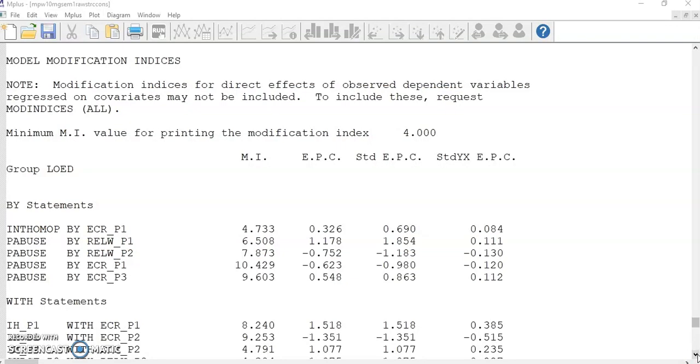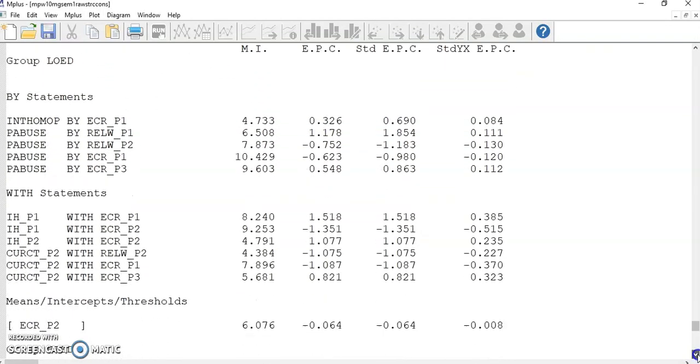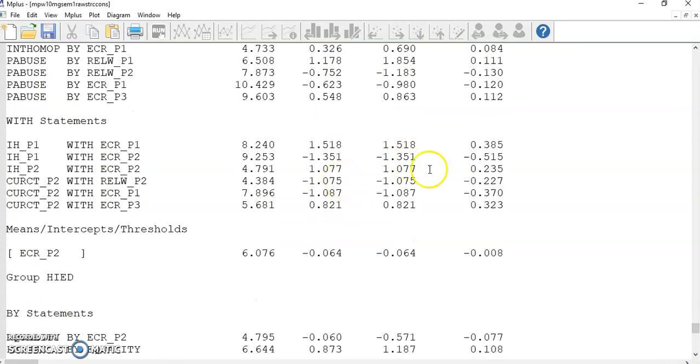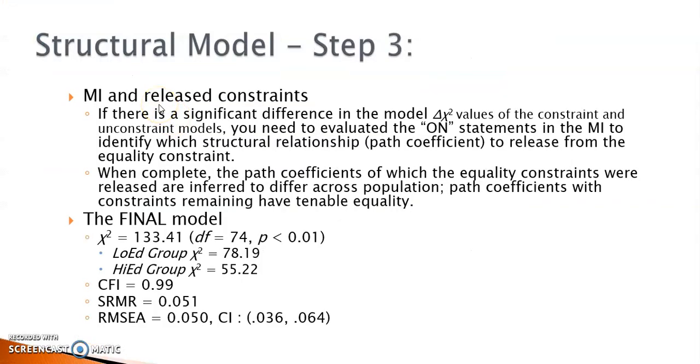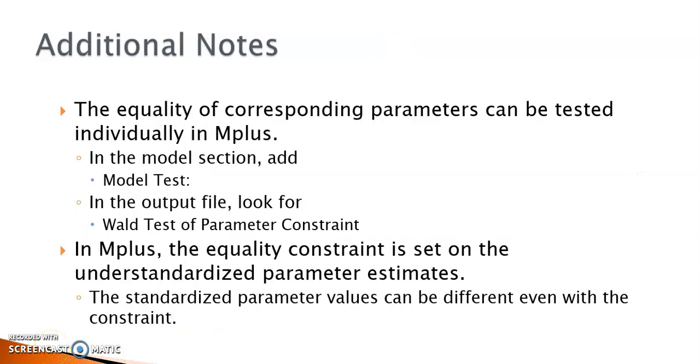Also, there are no suggested changes for any on statement in the output file. This is the end of the structural phase of the analysis. We conclude that the structural relationships are invariant between the low-add and high-add groups. I would like to end the discussion with two additional notes.